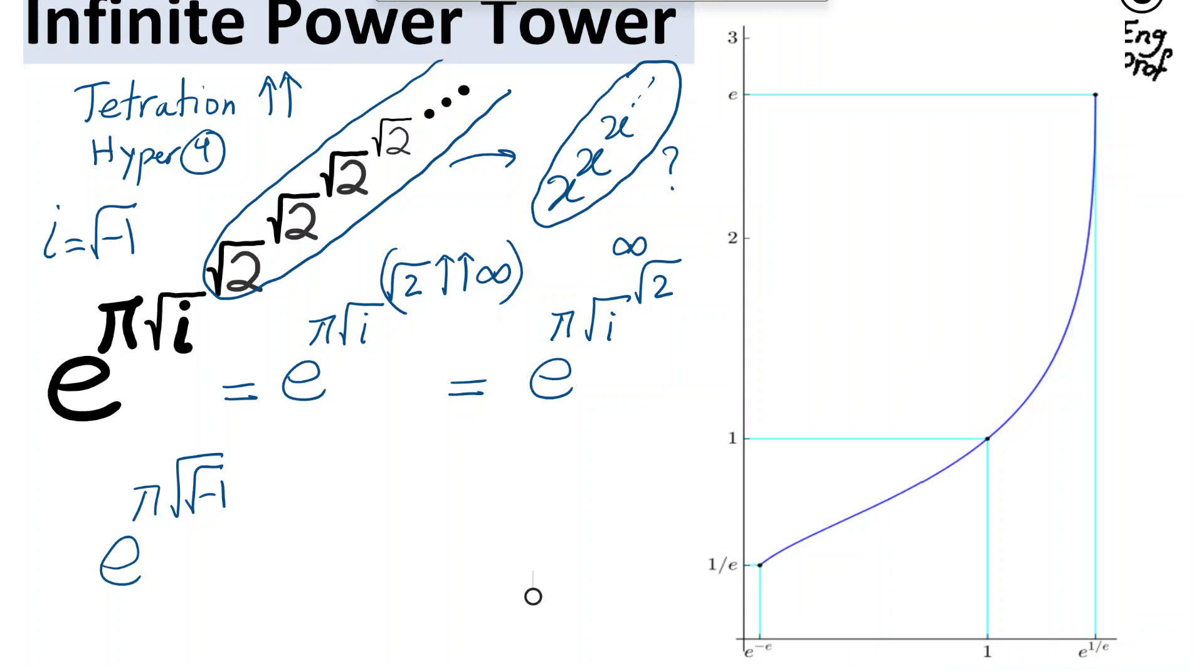Let's say we set this whole thing equal to y. So I am setting this tetration to infinity, x to the power x, to the power x equal to y. The question is, when does this converge? So here on the x-axis, we have x, and the y-axis is y.